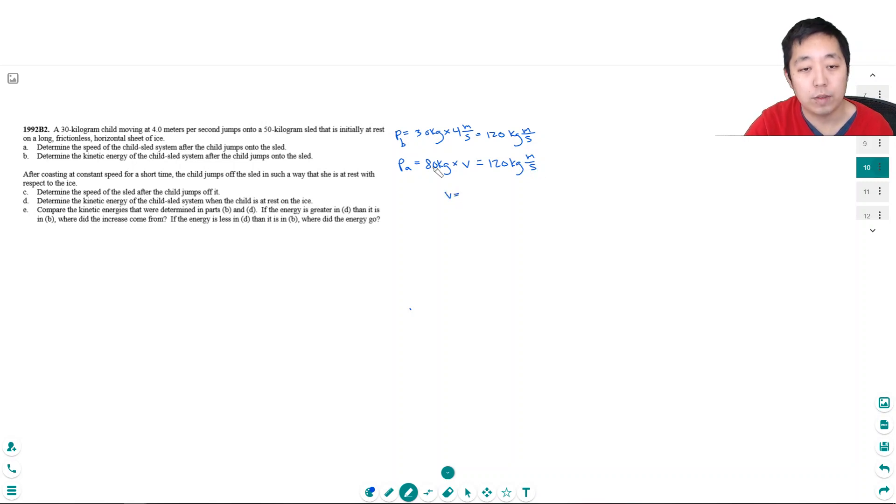So V would have to be 120 over 80 which would be 3 halves, 1.5 meters per second. So that's A.